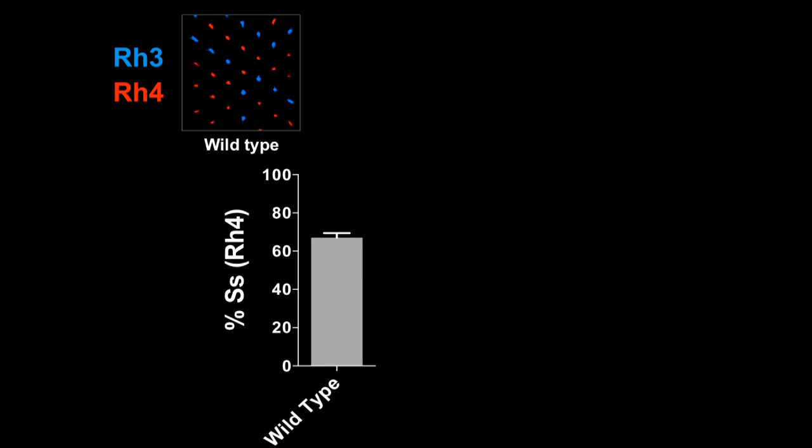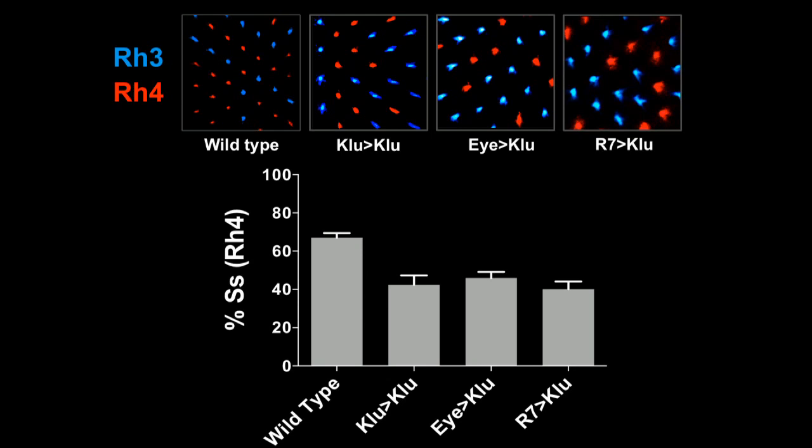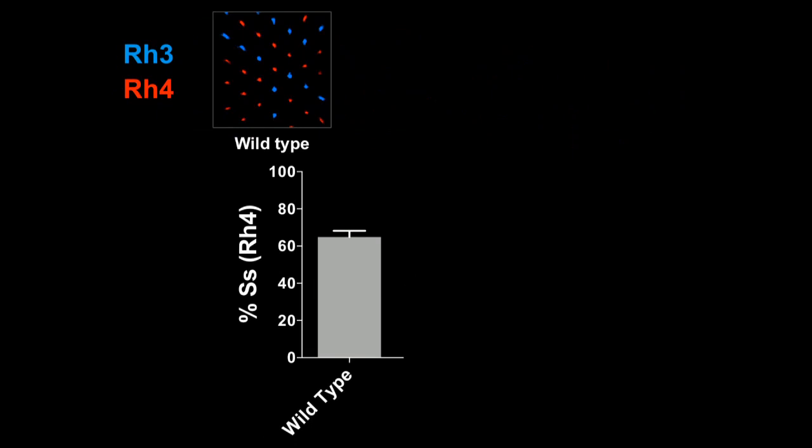So next we wanted to see what would happen if we overexpressed Clue. And we did this in three ways, with Clue driving Clue itself, a general eye driver driving Clue, and an R7-specific driver driving Clue. And in every case, we saw a significant decrease in the spineless on-off ratio. So this suggests to us that Clue is a repressor of spineless that binds better in the presence of the low spineless SNP.